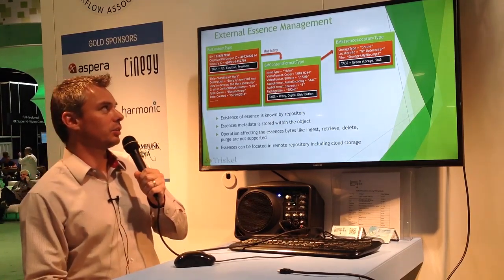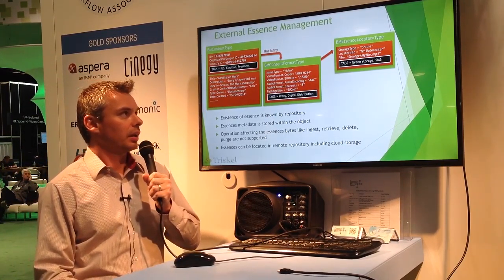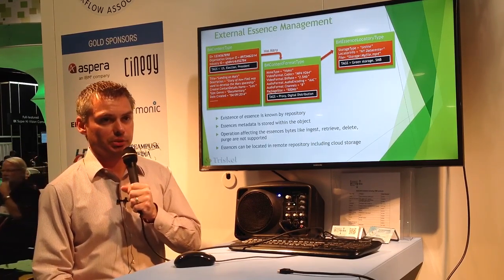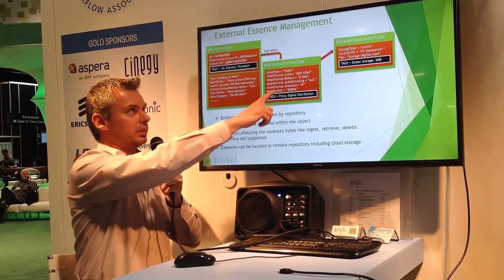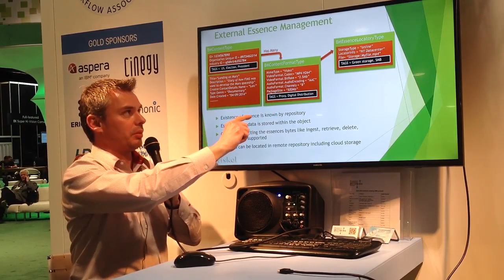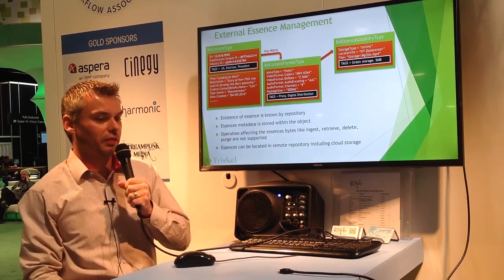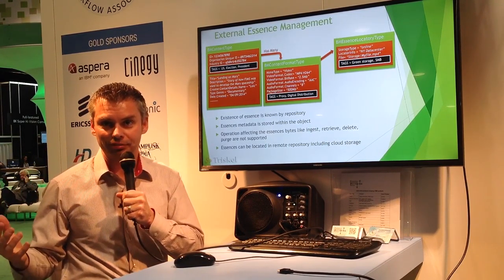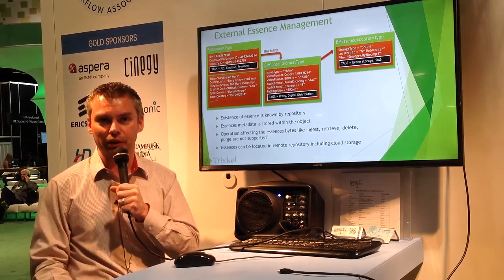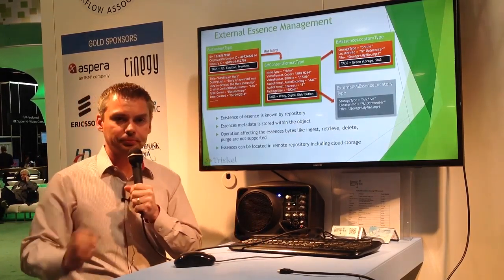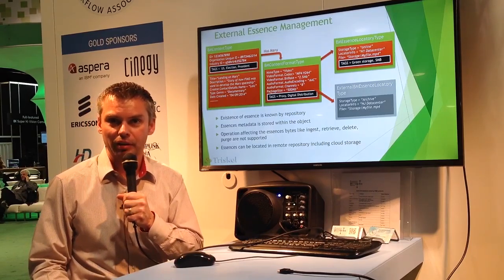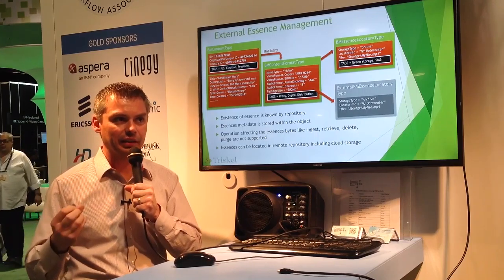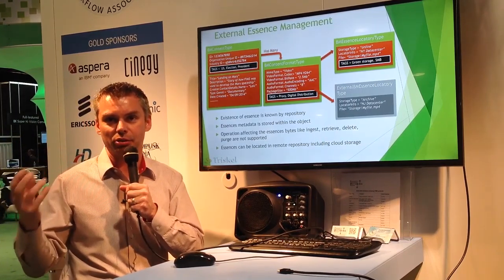Now we're jumping into external essence management. What you see on the screen is once again the typical FIMS object — one BM content type, one format type, and one essence. What if that essence is somewhere else, meaning the repository doesn't control it? It knows about the essence, it knows it's located somewhere, but it cannot act on it. It cannot move it, retrieve it, or delete it. We just need to be aware that it exists somewhere else. Those are exactly the capabilities we've added to the FIMS repository interface.